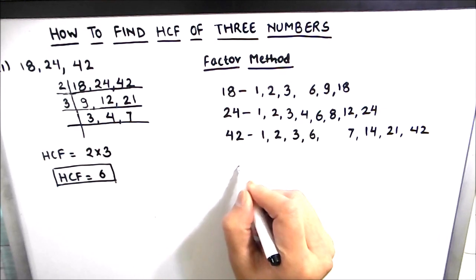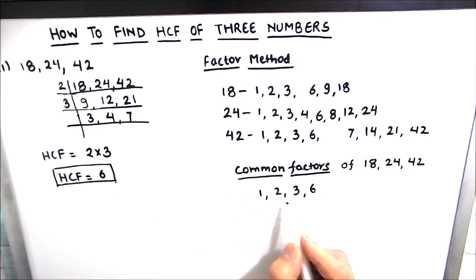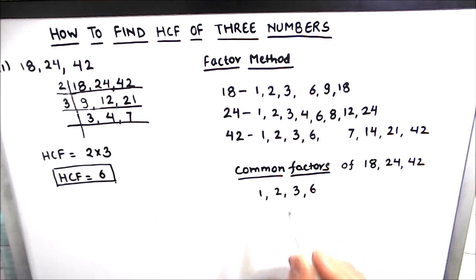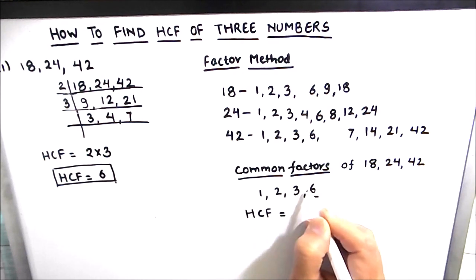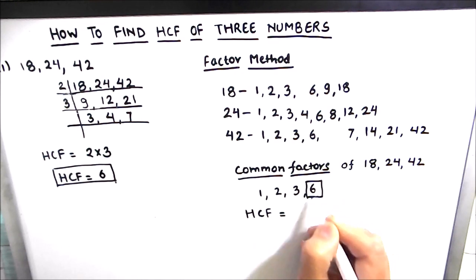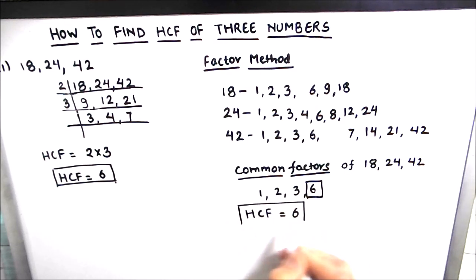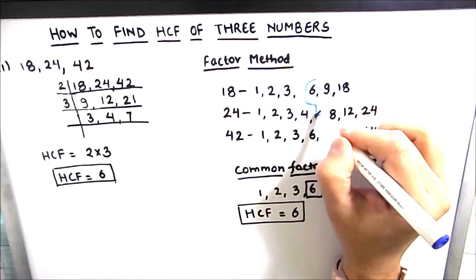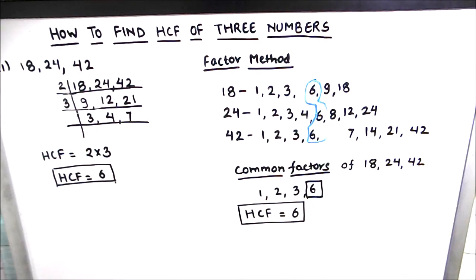Now we find the common factors of all three numbers. The common factors are 1, 2, 3, and 6. The highest common factor — the largest number common to all three — is 6. So the HCF of 18, 24, and 42 is 6.